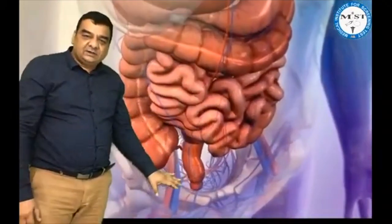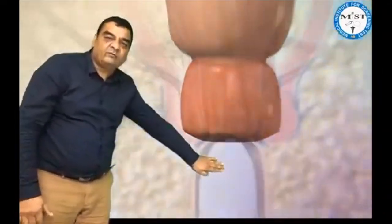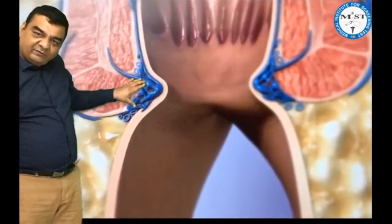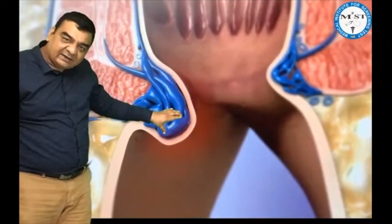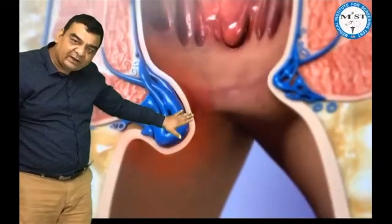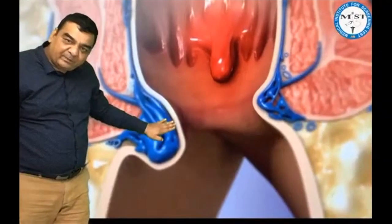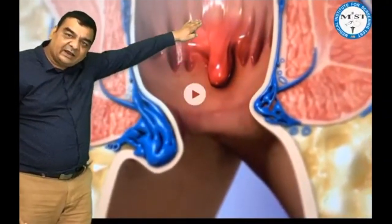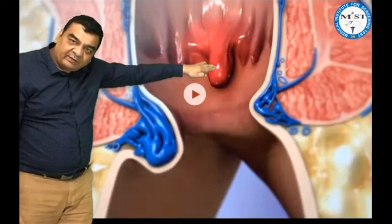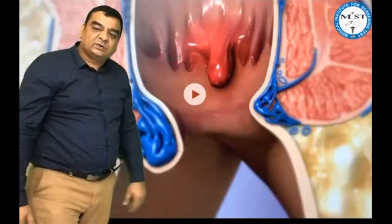The story of hemorrhoids, the story of piles: in a constipated individual, because of straining, if the tissue beneath the dentate line starts prolapsing, this will be called external hemorrhoid — a painful area, because anything below this junction would be painful. But if the anal cushions inside start prolapsing, this will be the internal hemorrhoid.